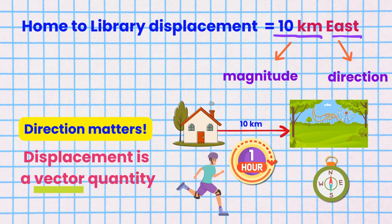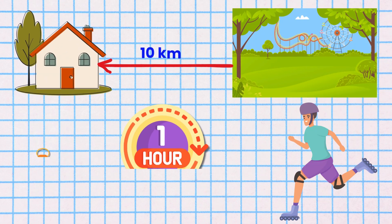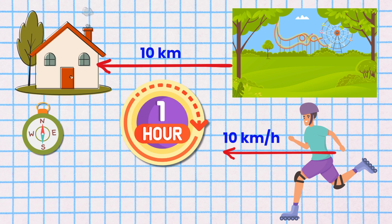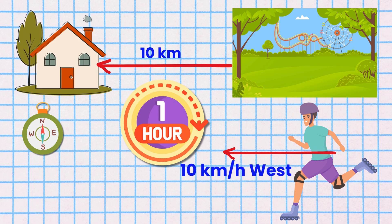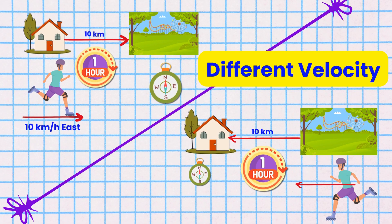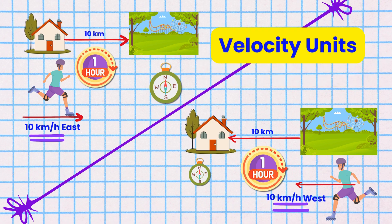Since displacement is a vector quantity, velocity is also a vector quantity. This means velocity has both magnitude and direction. Isaac rollerblades in a westerly direction back to his home from the park at a speed of 10 kilometers per hour. Now his velocity is 10 kilometers per hour west. So his speed stays the same but his velocity changes because the direction has changed. Also notice that the unit for velocity depends on the units used for displacement and time.